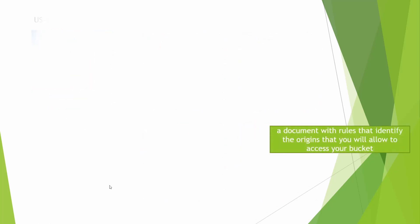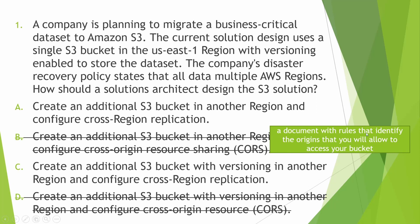CORS is a document with rules that identifies the origins, ports, and what you want to allow to access the bucket. This is not about accessing your bucket — it is about replication. Since CORS is not relevant here, we need cross-region replication. So the option is: create an additional S3 bucket in another region and configure cross-region replication.